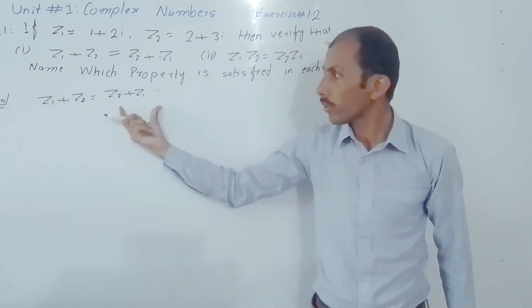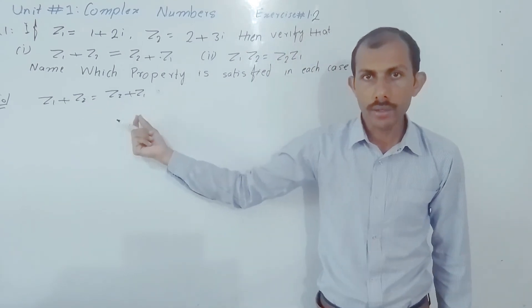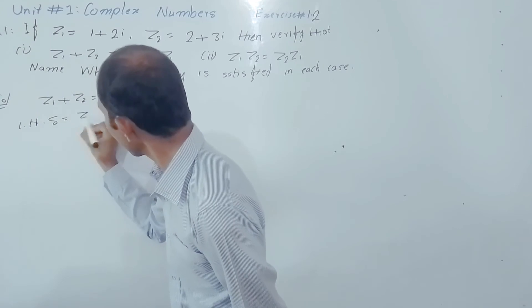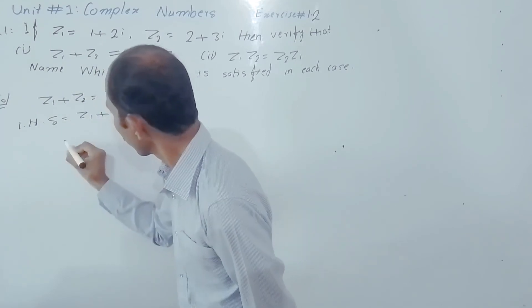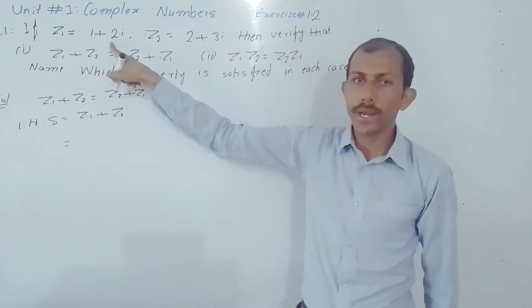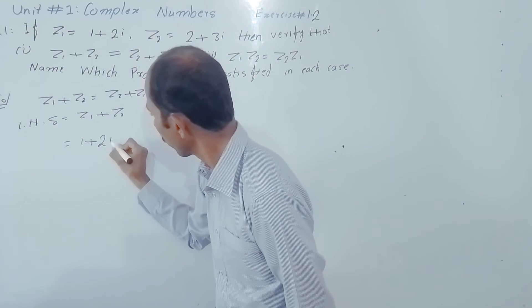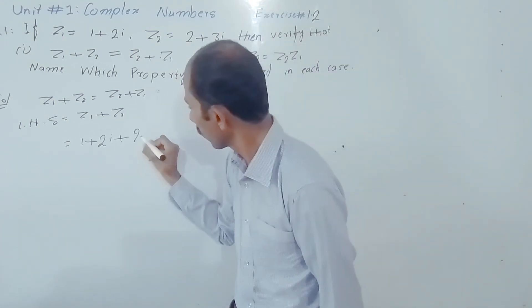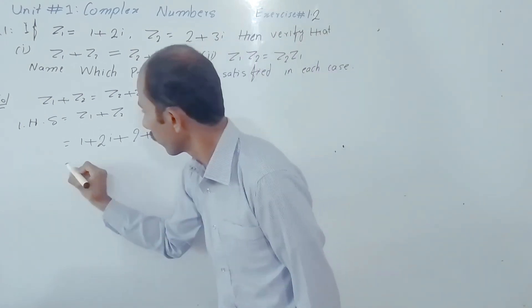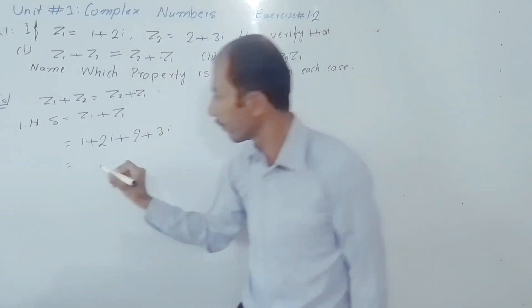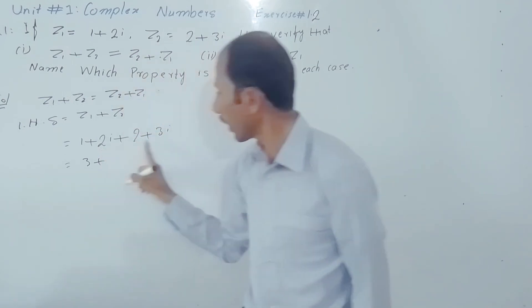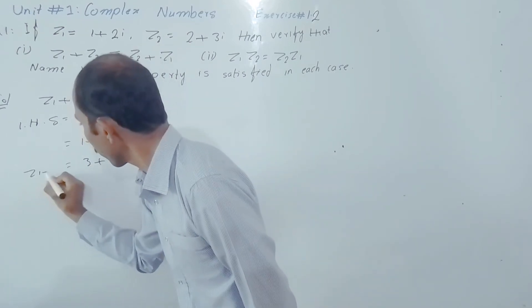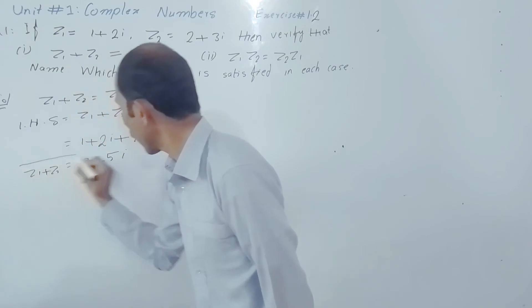Dear students, first prove Z1 plus Z2 is equal to Z2 plus Z1. Taking left hand side: LHS equals Z1 plus Z2, which equals (1 plus 2 iota) plus (2 plus 3 iota), which equals 3 plus 5 iota.